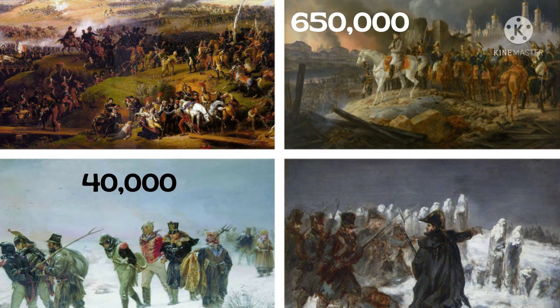Napoleon was defeated because the Russians would not fight in a straightforward battle — scorched earth tactics. French supply lines were too long, Russian winters were too cold, and the Russian army blocked the French retreat. Of the 500,000 French soldiers invading Russia, only 40,000 retreated, and just 10,000 made it home.